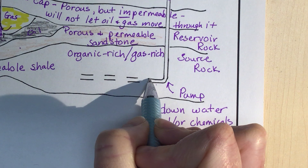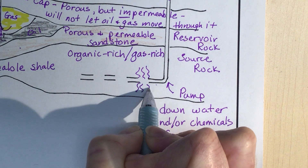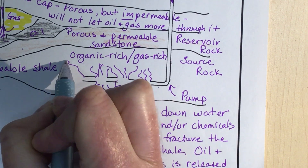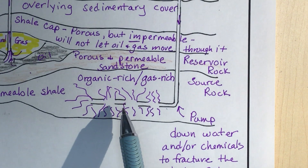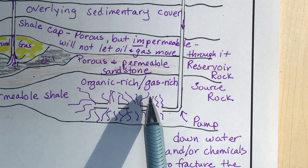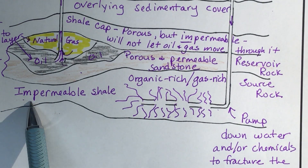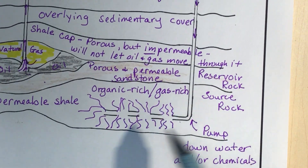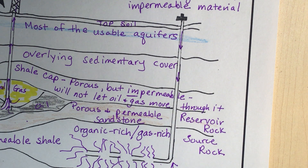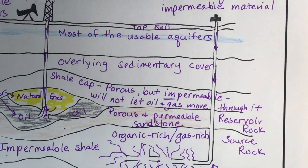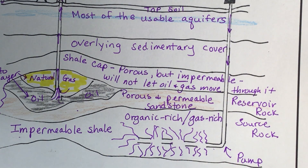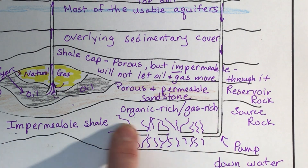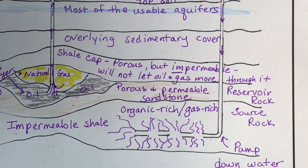They send it down and the pressure of the water or chemicals cracks the rock — it comes out of the pipe and fractures all the surrounding rock. The shale is impermeable so natural gas normally can't move through it, but now there are cracks and fractures for the natural gas to move into the pipe and out. That's the technique of fracking: you crack impermeable shale to release the gas trapped within it.